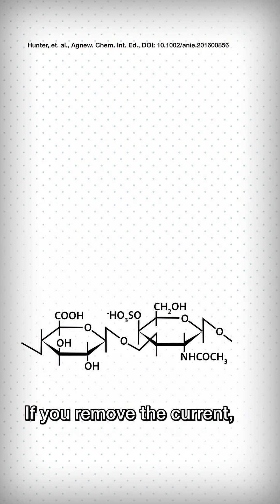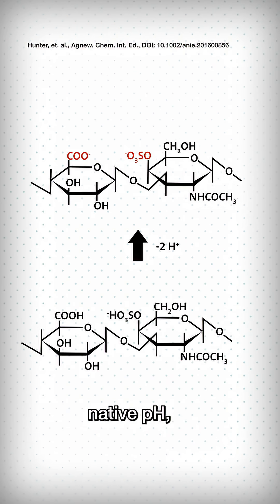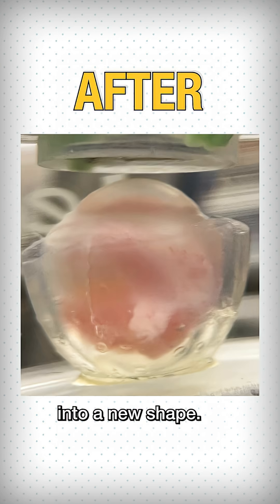If you remove the current, the matrix returns to its native pH, bonds reform, and the tissue locks into a new shape.